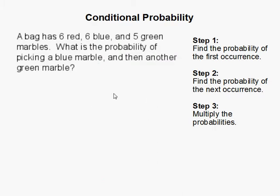Conditional probability. A bag has 6 red, 6 blue, and 5 green marbles. What is the probability of picking a blue marble and then another green marble?